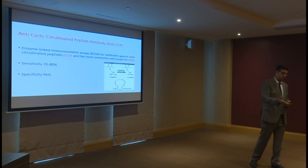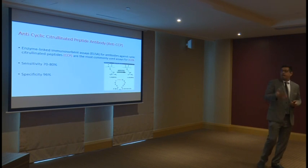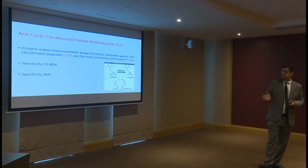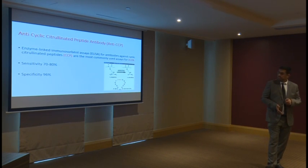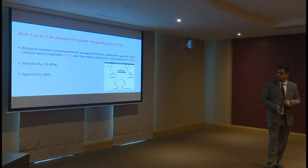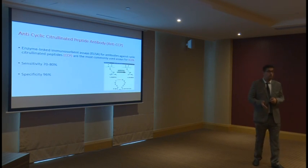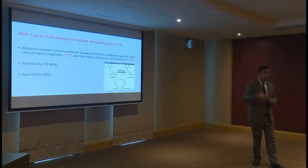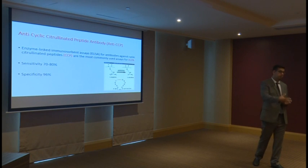Patients who are ACPA positive — the sensitivity is 70% to 80% and the specificity is 90% to 96%. So anti-CCP is more specific for rheumatoid arthritis.